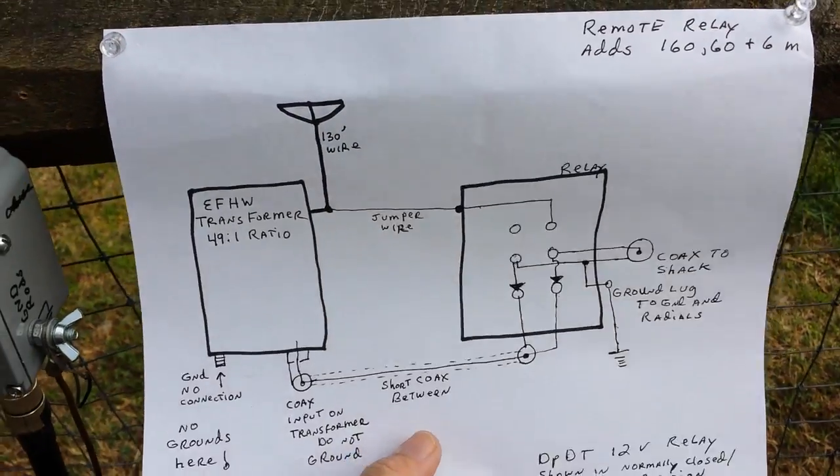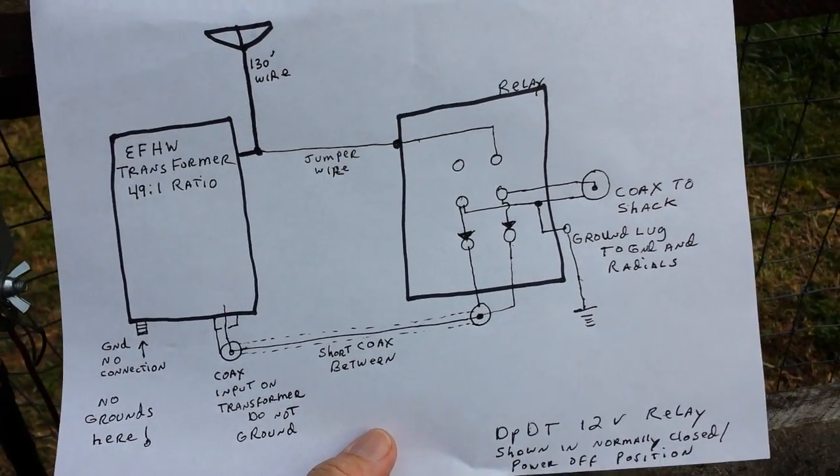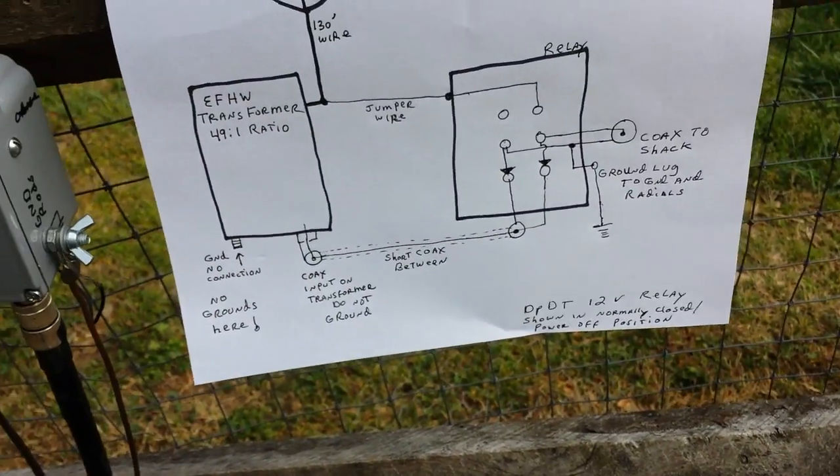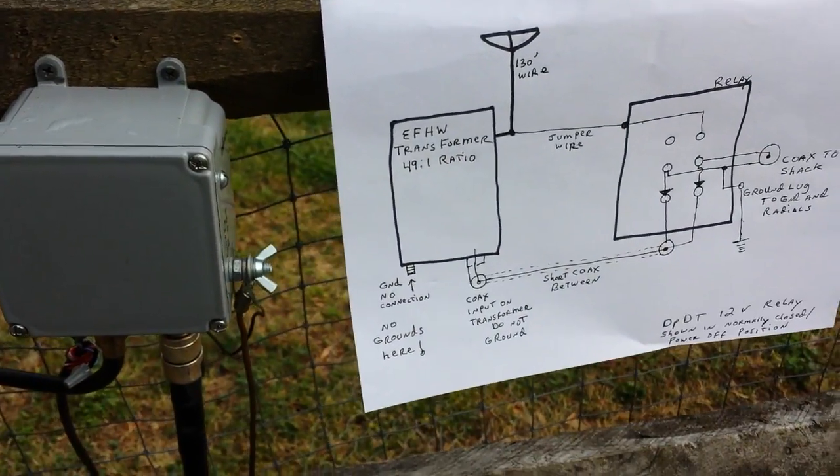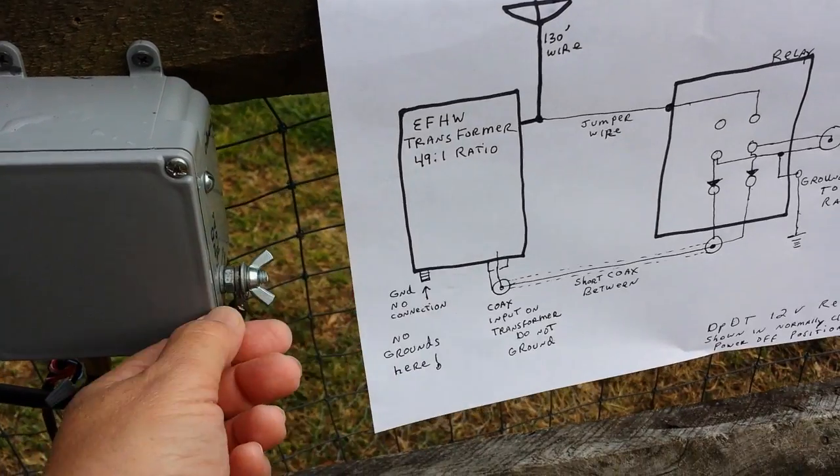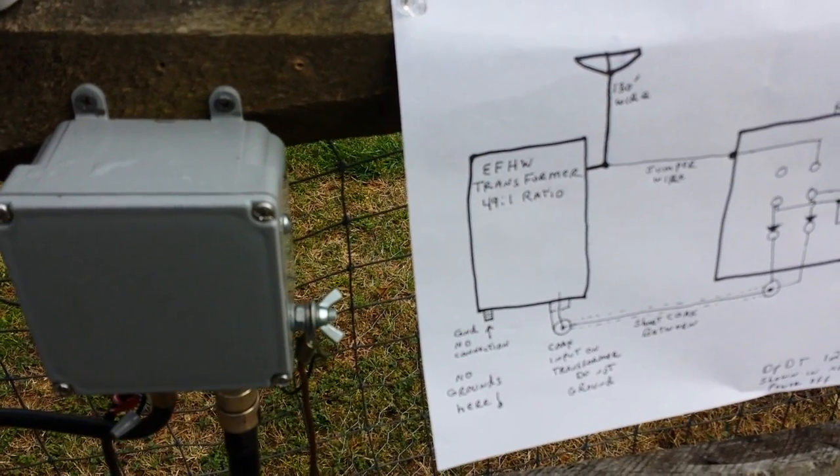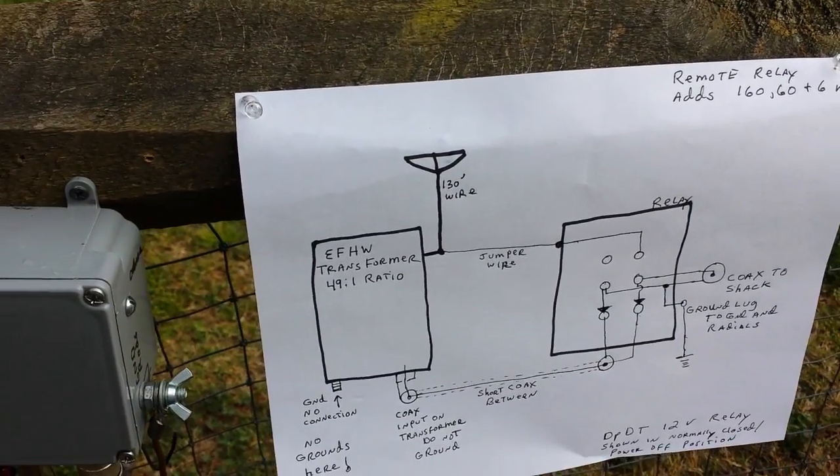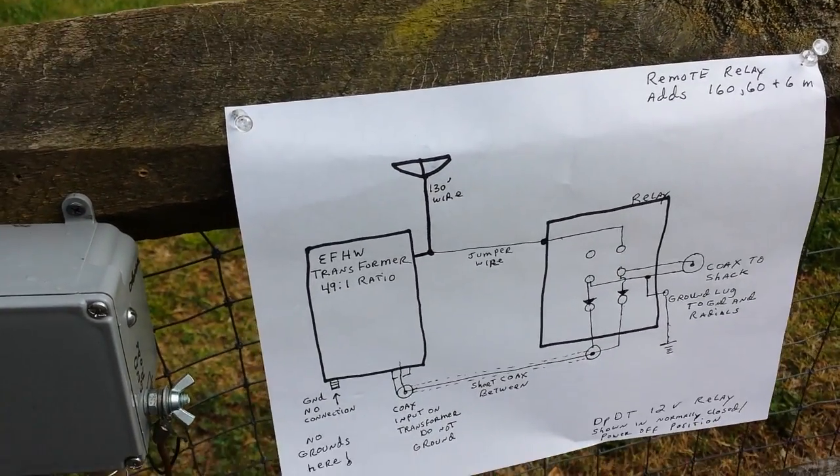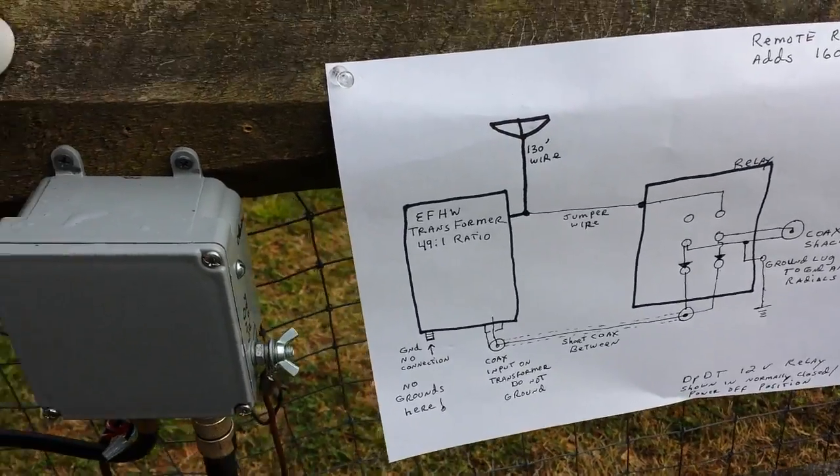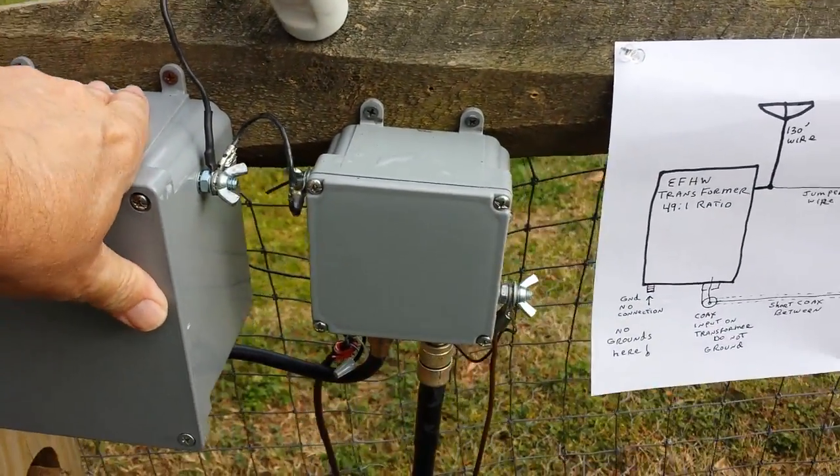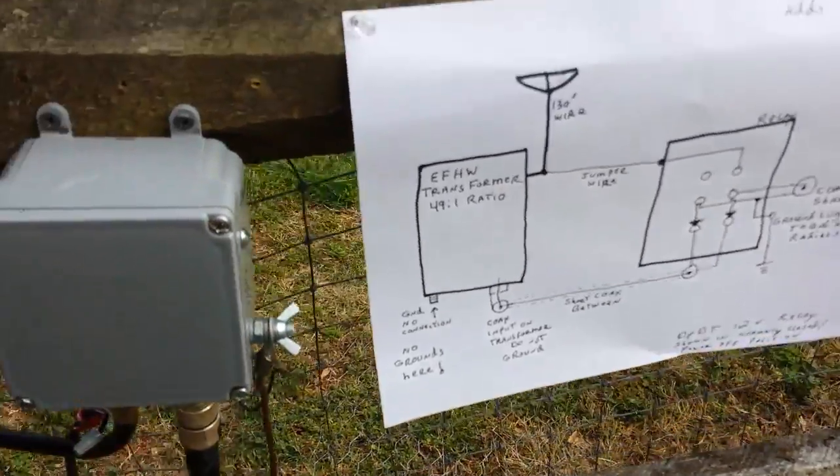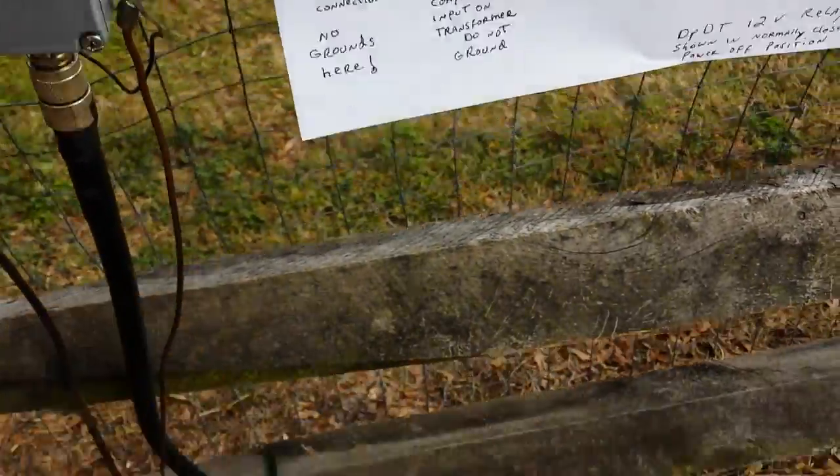My ground system. And I might add that if you do operate this like this on 160 you will need a decent ground. You don't want to try to rely on your coax for a ground. You can get by with that just fine with the 80 through 10 but not on 160. And same goes for 60 and six meters. You need some kind of ground. So we've got an eight foot ground rod.